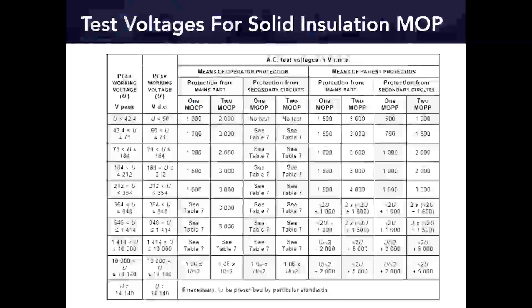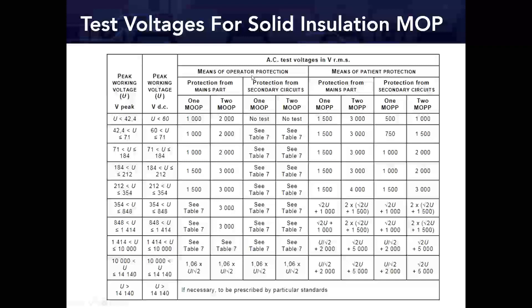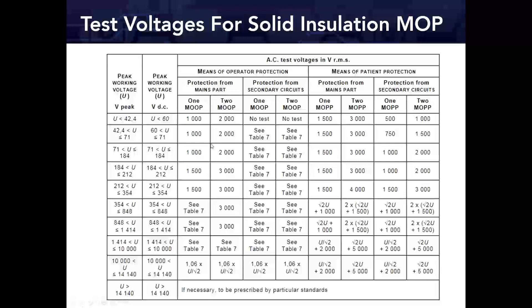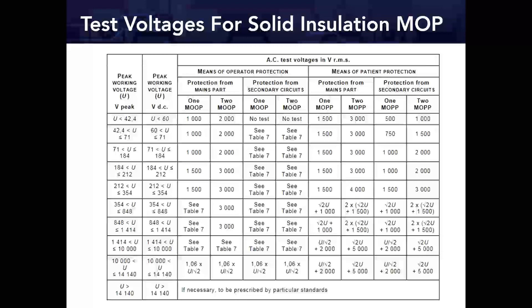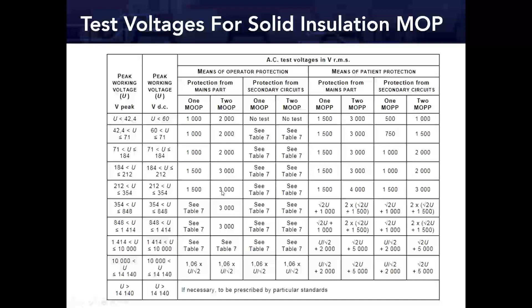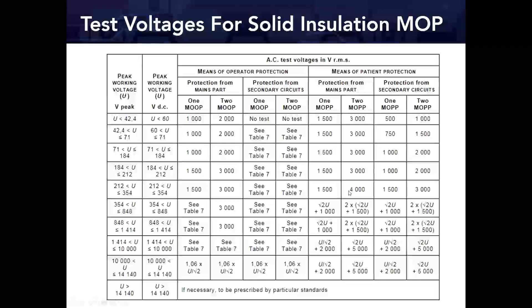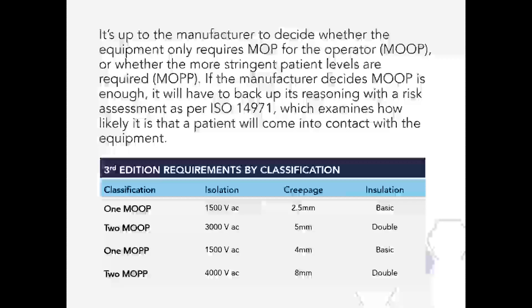Table 6 lists voltage requirements. The left side is means of operator protection and the right side is means of patient protection. The rated voltage of your device determines which row to use. For most medical devices, the highest rated voltage is 120–240V. For 240V-rated products: one MOOP requires 1500V and two MOOP requires 3000V AC hypot. For means of patient protection, voltages can reach as high as 4000V for applied parts.